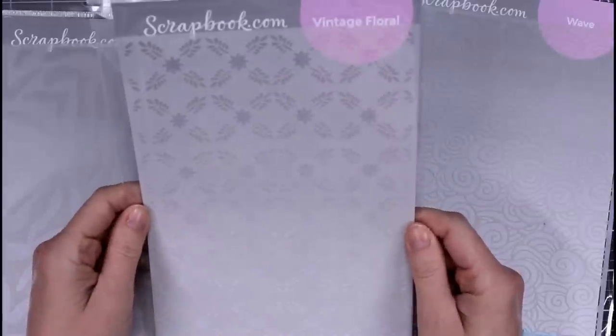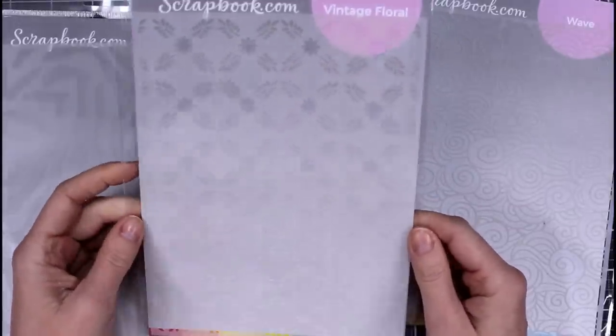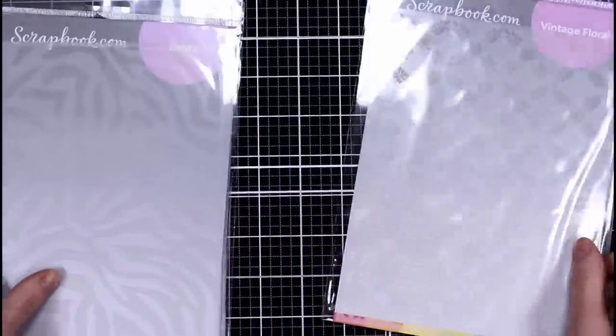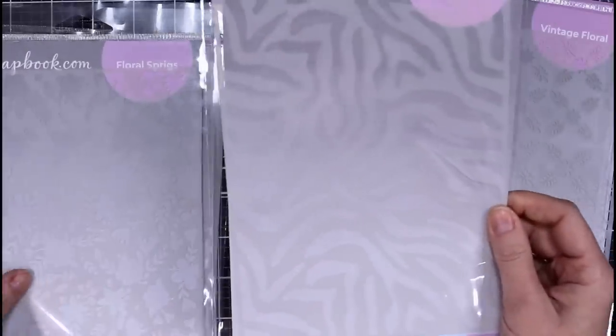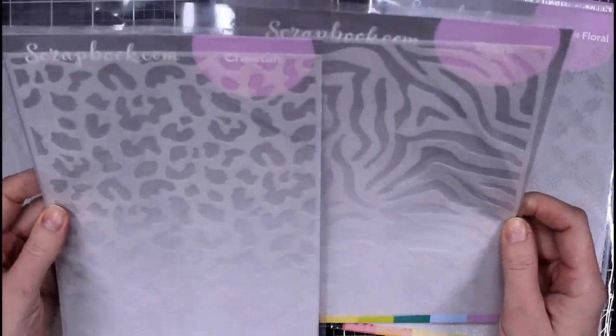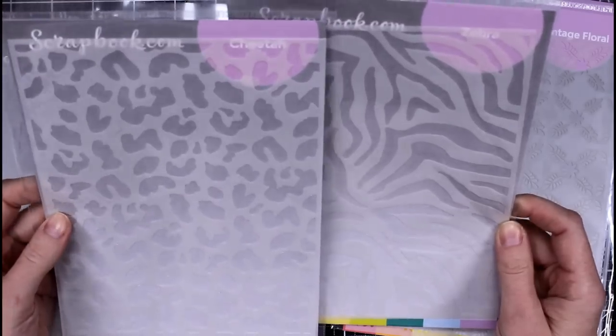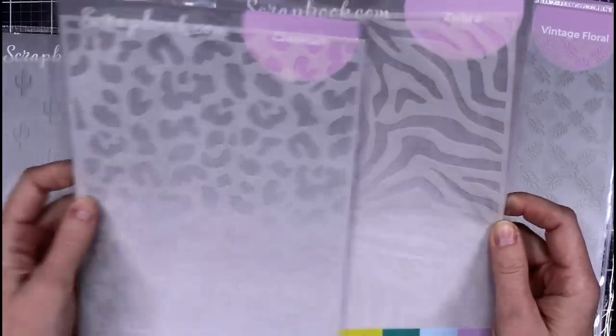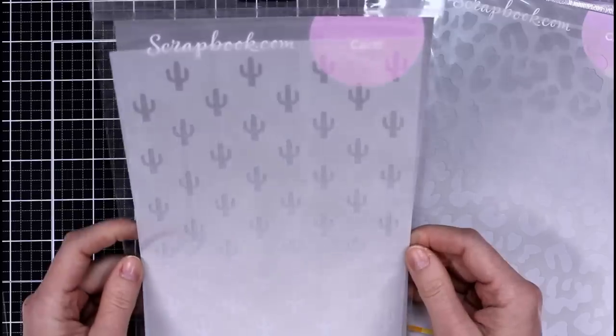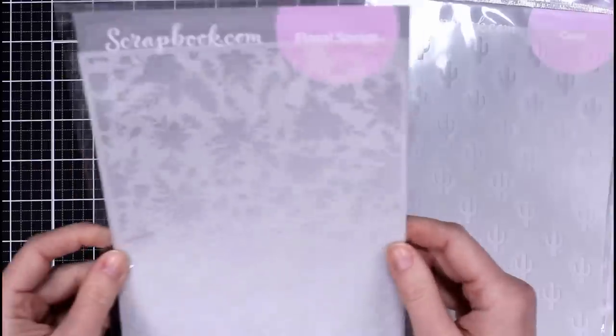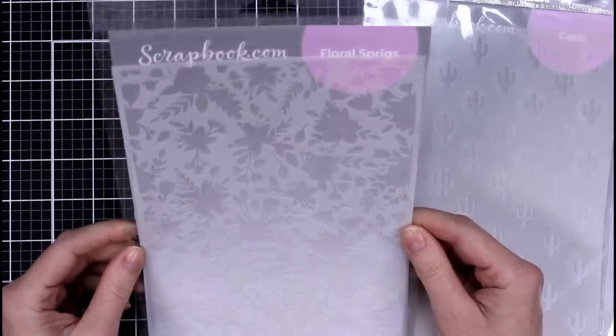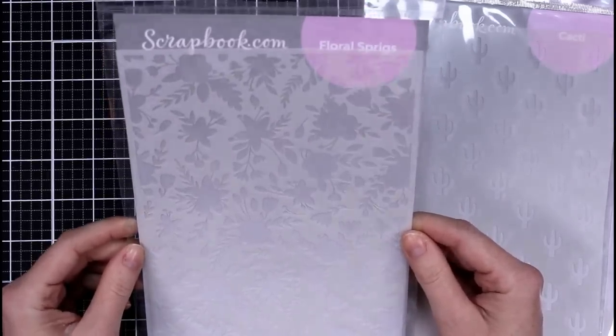This one's Vintage Floral. I'm trying to just show it so there's not too much glare, so hopefully you can see that. Oh, I love this—this is Zebra, and there's another one. This one's Cheetah. Zebra and Cheetah, so fun. That's going to be a blast to do. This one is called Cacti. And then this one is Floral Springs, so you can see all those floral accents in there. Very pretty.